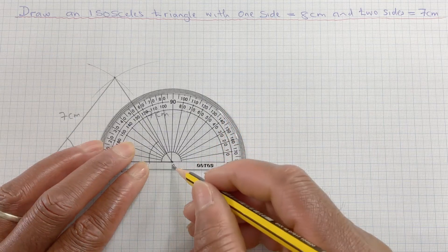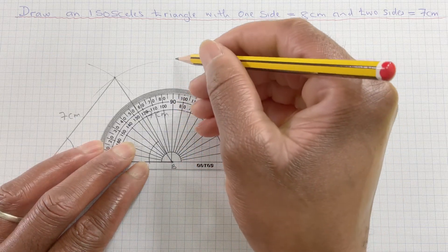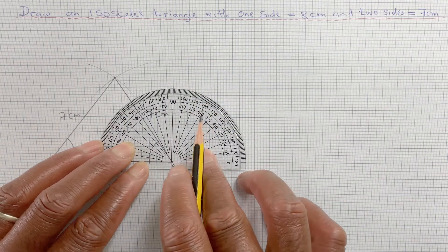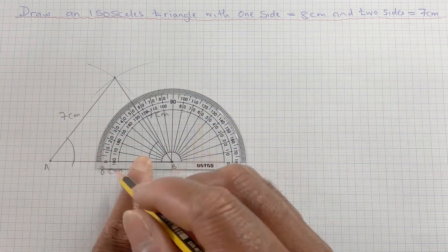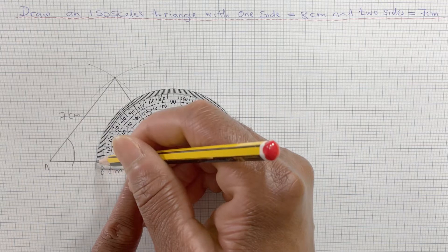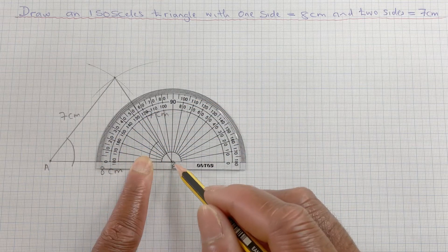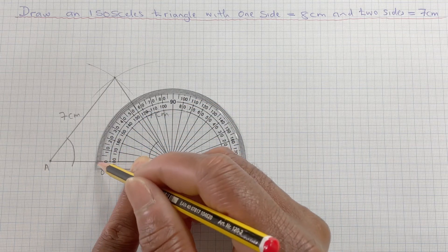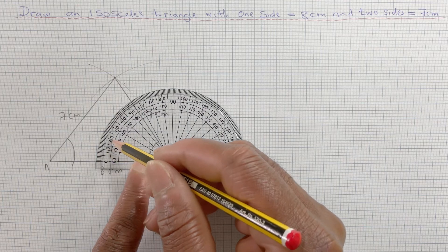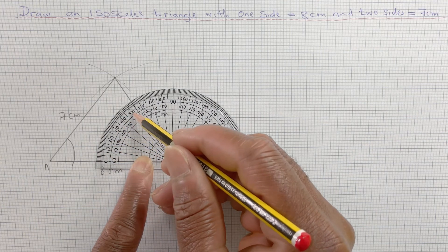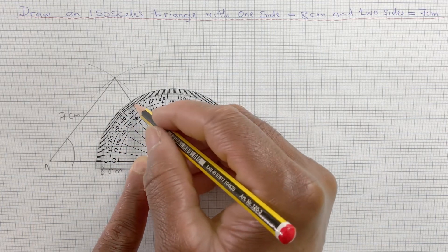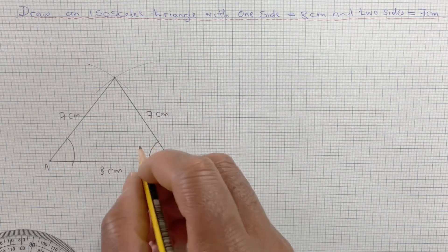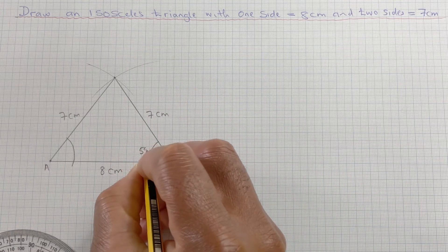And the line 90 degrees lies along that line. Now I need to measure the angle from 0. So it's going to be, I need to measure this angle B from 0, 10, 20, 30, 40, 50, 55. So that's 55. So this angle is 55 degrees.